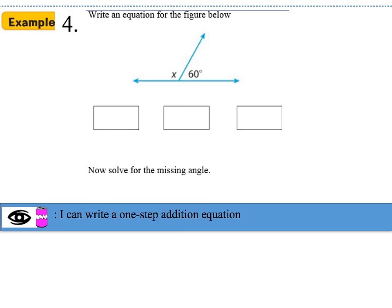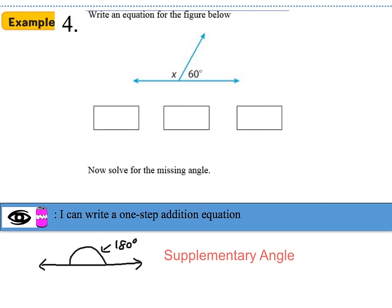For example 4, write an equation for the figure below. Let's introduce you to a straight line — the total degrees of a straight line is 180 degrees, and this is known as a supplementary angle. Any supplementary angle has a straight line worth 180 degrees. Looking at our figure, we have a straight line, so we have a supplementary angle. The equation is: x plus 60 degrees equals 180 degrees, because this is a supplementary angle.